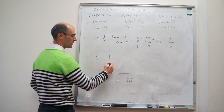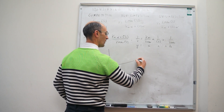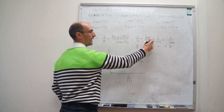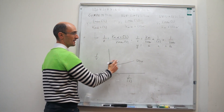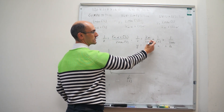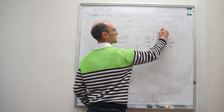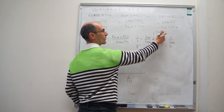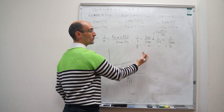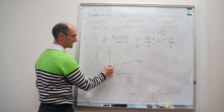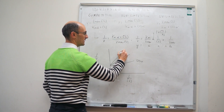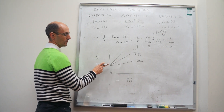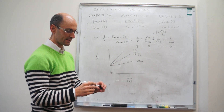So when the concentration of inhibitor is zero, you have one line; once you add inhibitor, only the slope changes — the intercept doesn't. The slope increases because alpha equals 1 + [I]/K_I, so when inhibitor concentration is greater than zero, alpha is greater than one and the slope goes up. That's the fingerprint for competitive inhibition: the intercept doesn't change, but the slope does.